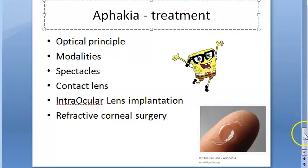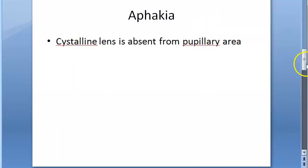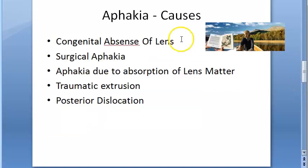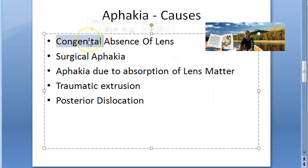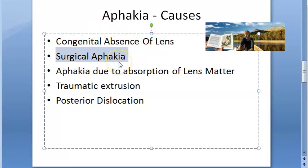Shall we get started with the causes? First, aphakia can be congenital — the person was born without the lens. It is a rare condition. Then there is surgical aphakia, where the doctor has removed the lens — this is usually the most common cause.